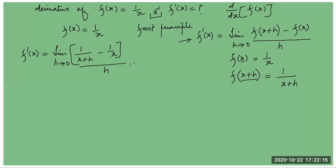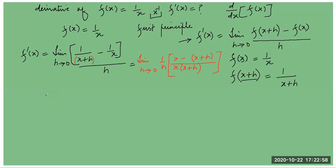This is equal to limit h approaches 0. I take the LCM of x plus h and x, which is x into x plus h. So on the top I get x minus x plus h. This gives limit h approaches 0 of 1/h times: x cancels giving minus h, divided by x into x plus h.